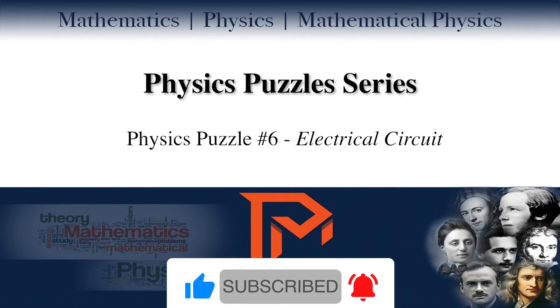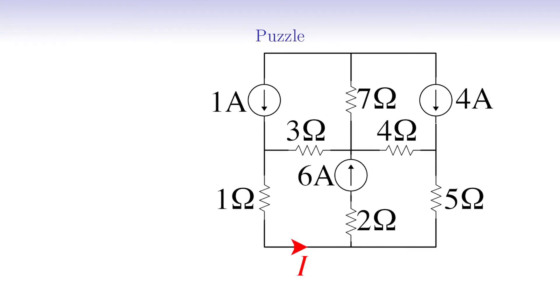Now, let's begin delving into the puzzle. Today's puzzle is an electrical circuit problem that you may see a similar one on Physics Olympiads or University Entrance Exams. In the given circuit, we shall find the current I shown by the red color.